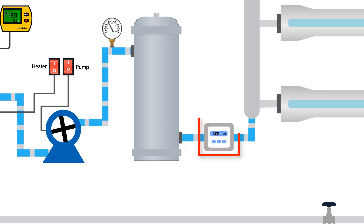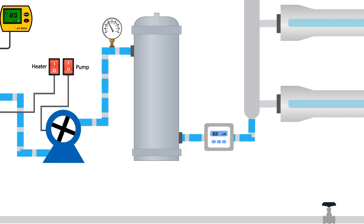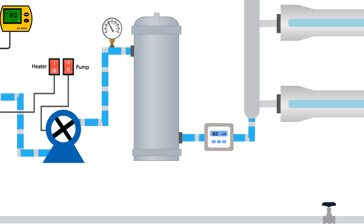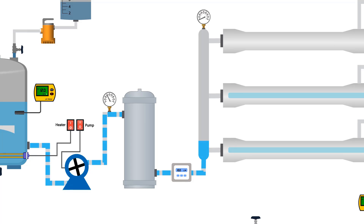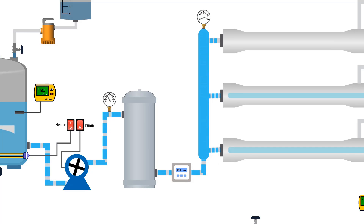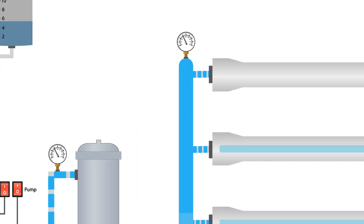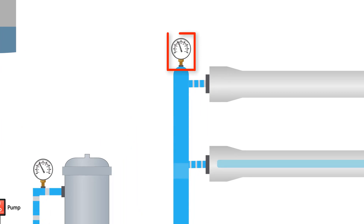The fluid then goes to the inlet flow meter, which displays the flow rate of the passing fluid. It then goes to the inlet header, which distributes it to the membranes. The pressure gauge shows the pressure before the membranes.